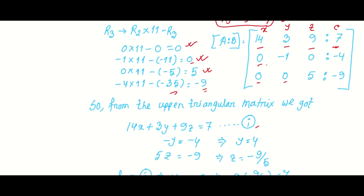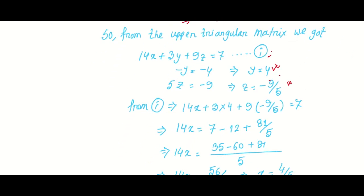From the second row: minus y is equal to minus 4, therefore y is equal to 4. From the third row: minus 5z is equal to minus 9, therefore z is equal to minus 9 by 5. Now we use back substitution in the first equation to find x: 14x plus 3 into 4 plus 9 into minus 9 by 5 is equal to 7.